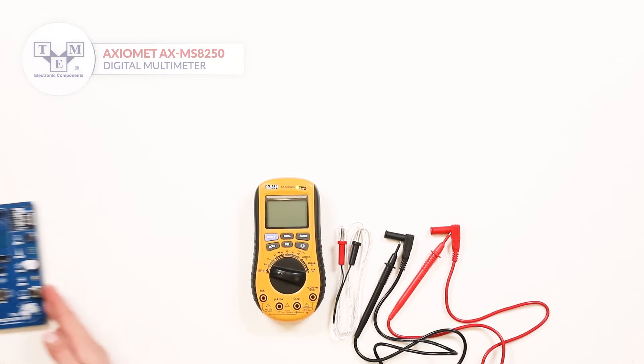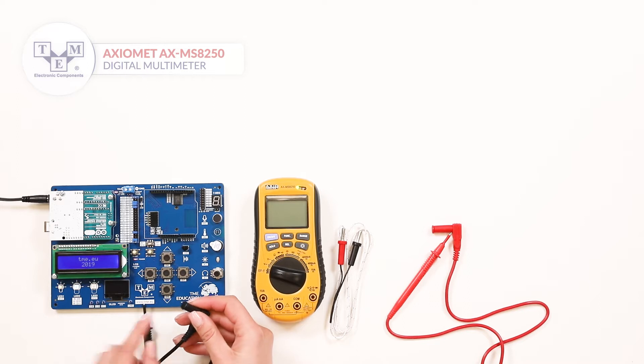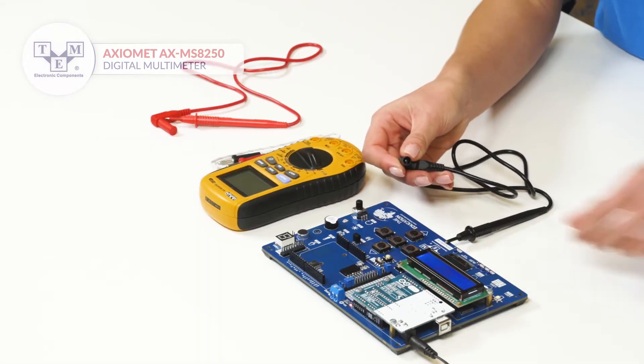The meter can identify if the test leads are connected incorrectly depending on the measurement and has an ergonomic enclosure which is adapted to the shape of the palm.